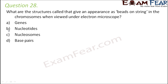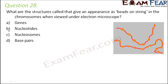Question number 28. What are the structures called that give an appearance of beads on a string in chromosomes when viewed under an electron microscope? When discussing the structure of DNA and chromosomes, we find that DNA is wrapped around the histone octamer to form nucleosomes. One nucleosome contains 200 base pairs of the DNA helix. Nucleosomes in chromatin are seen as beads on a string under an electron microscope — those beads are nothing but the nucleosomes.